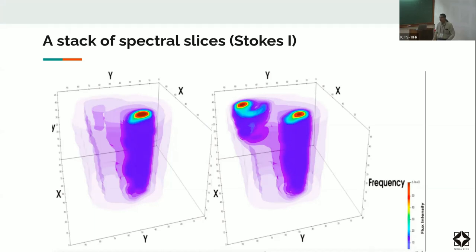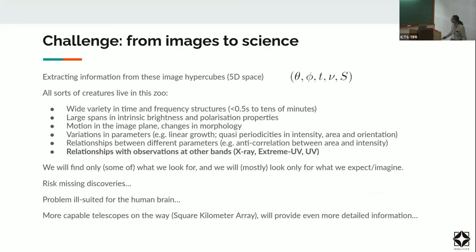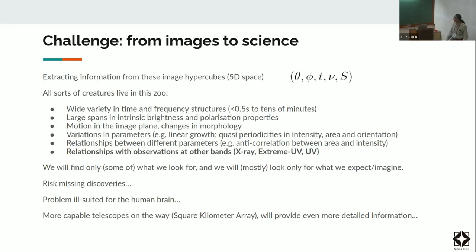These oscillations you see are real — this is high-quality, high signal-to-noise data. The structures visible here represent an actual magnetic loop on the sun. There's a lot of interesting information buried inside these image hypercubes, and the challenge we're struggling with is going from images to science: how do you extract information from this five-dimensional dataset?